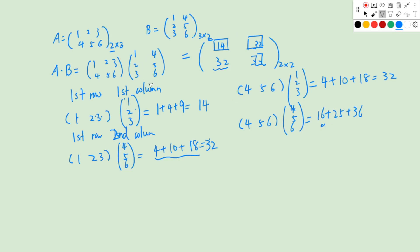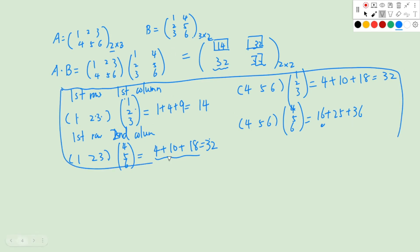I would suggest you practice more on this calculation to get familiar with it. Initially, you can write out each step as demonstrated, but once you are familiar with matrix multiplication you can just look at, for example, first row times first column, and compute more easily.